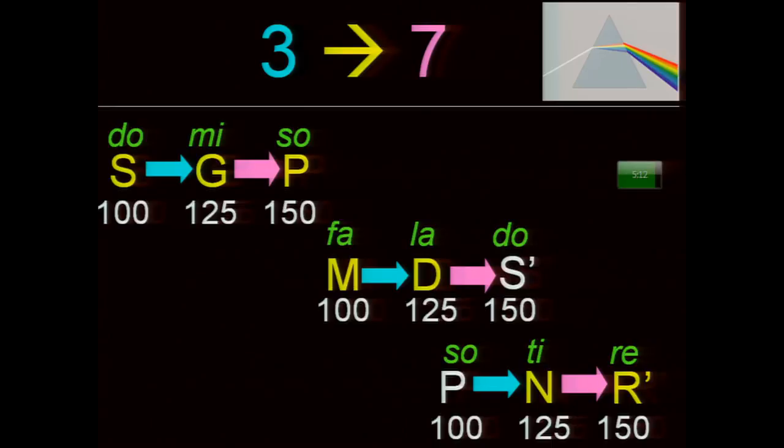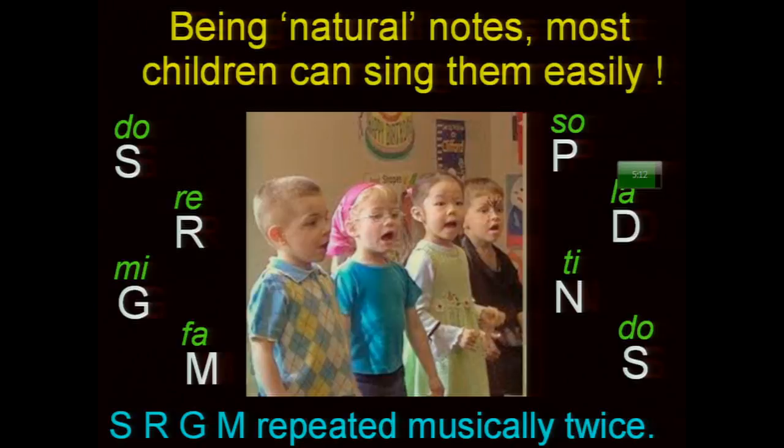These three Shrutis naturally give rise to seven Shrutis through three triads — Sa Ga Pa, Ma Dha Sa, Pa Ni Re — each at a frequency ratio of 100 to 125 to 150. So three becomes seven. Being natural, any child with a little sense of music easily sings Sa Ga Ma Pa Dha Ni Sa and back. The pattern Sa Ra Ga Ma repeats, and these four basic notes give us the secret code for all 22 Indian Shrutis.